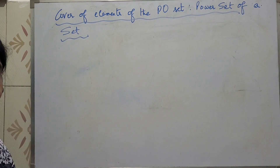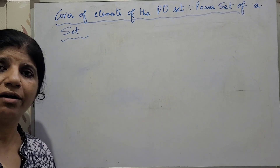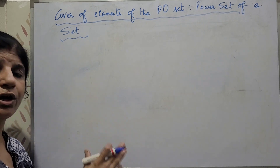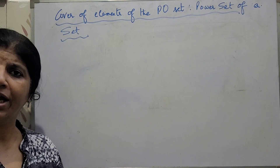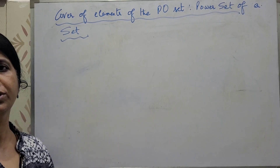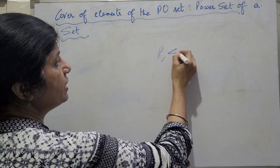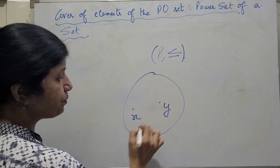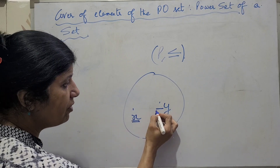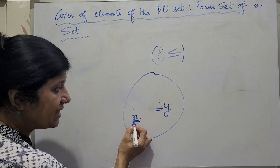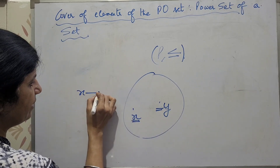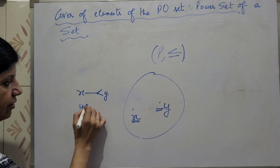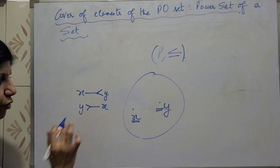Before I start with the example, let me just recall the definition of cover, although I have discussed this in my earlier video on covering relation. Let me define again what cover of an element in a PO set means. Suppose you are in the PO set P with less than or equal to, and suppose there are two elements X and Y. Then the element X is said to be covered by Y, or Y is said to be a cover of X, written as Y covers X.